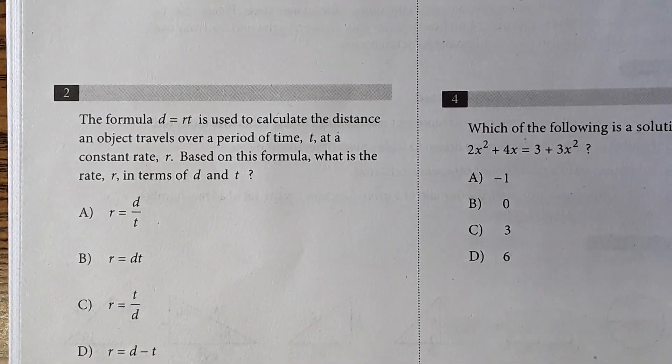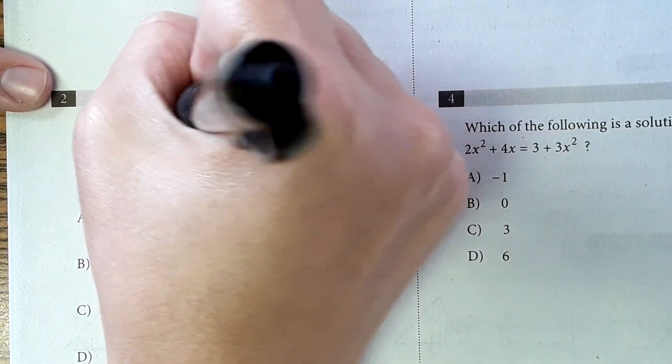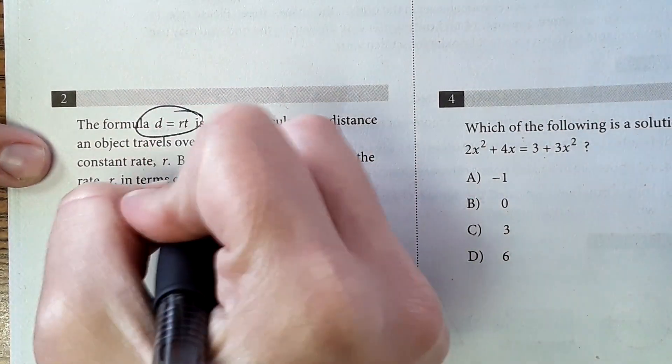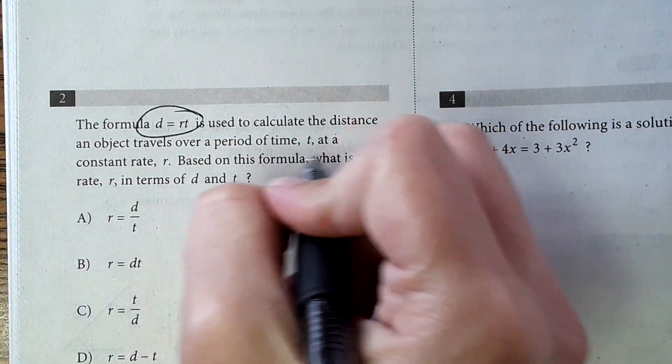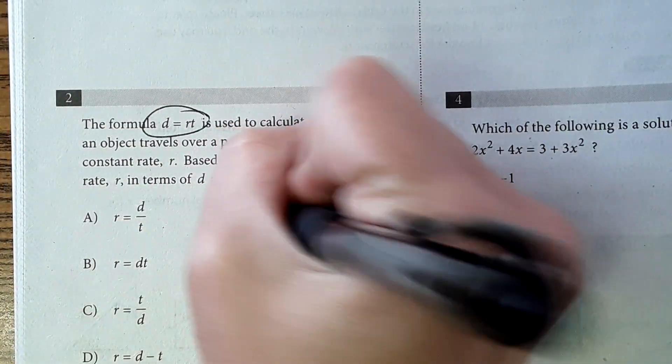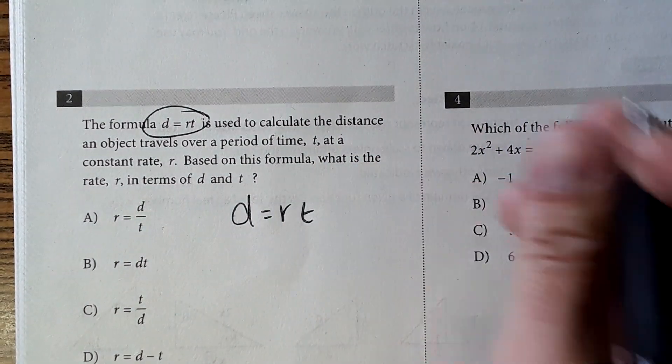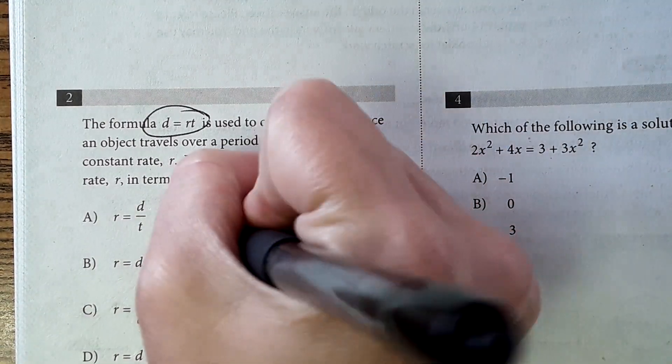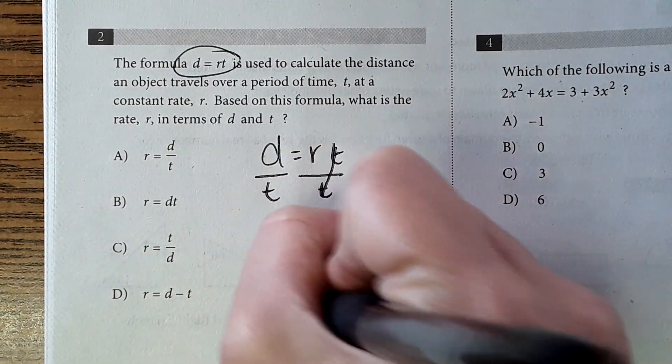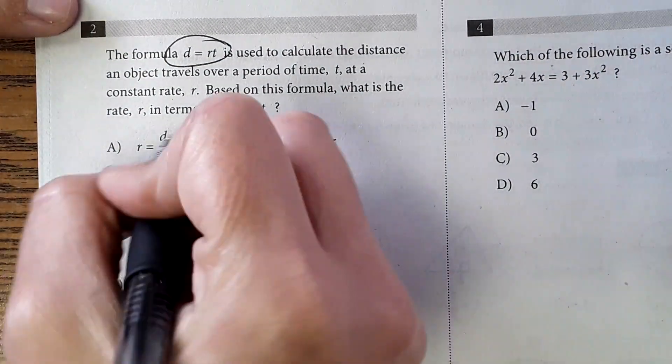Okay, next one, number two. This is a very common question as well. The formula D equals R times T. They want you to rearrange it so that way R is by itself. So based on the formula, what is the rate R in terms of D and T? So you have to take this equation and get R by itself on one side of the equal sign. So to do that, I'm going to divide both sides by T. And then I get D over T equals R or R equals D over T. And that is the answer choice I am looking for. So it would be A.